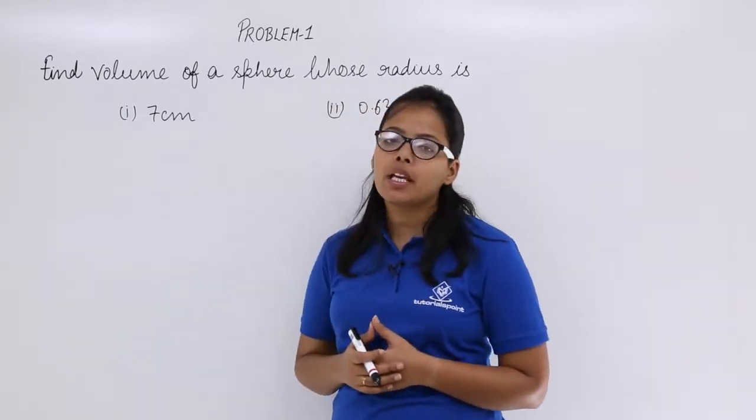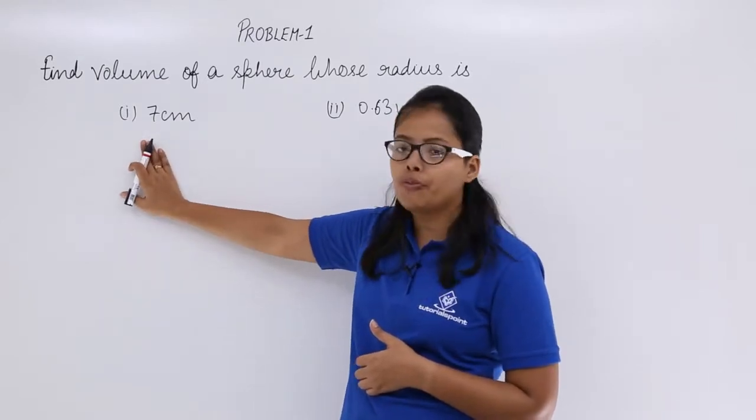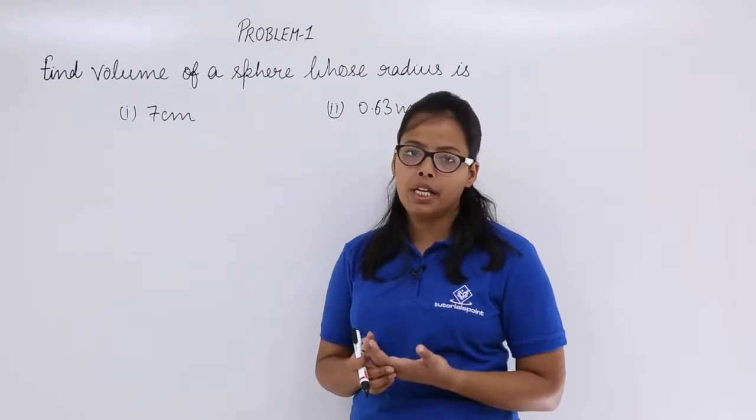So what has been given here? It has been given that find the volume of a sphere whose radius are first 7 centimeter and in the second part it is 0.63 meter.